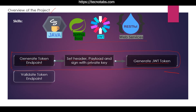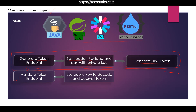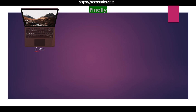We will also write the server-side code where we expose a validate-token endpoint. The token generated in the previous step will be provided to the validate-token API, and we will use the public key to decrypt and decode that token. Finally, we will generate a validate-token response that will be either success or failure. The code will be available on our website and GitHub account, which you can find in the video description.